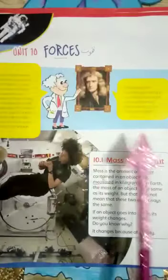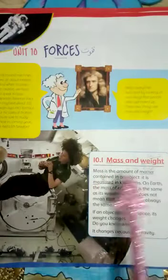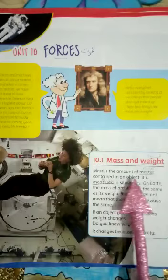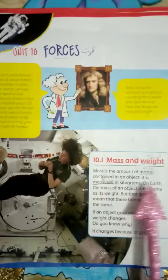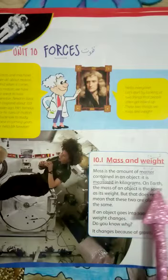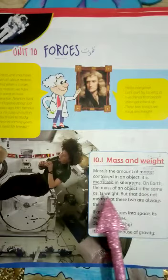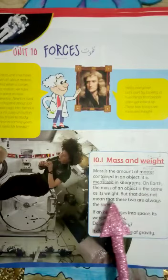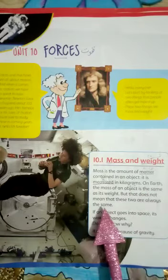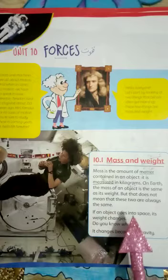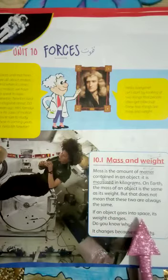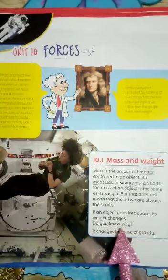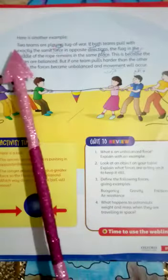Mass and weight: Mass is the amount of matter contained in an object. It is measured in kilograms. On Earth, the mass of an object is the same as its weight, but that does not mean that these two are always the same. If an object goes into space, its weight changes.